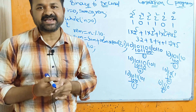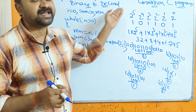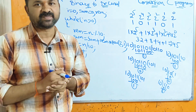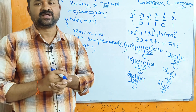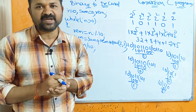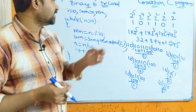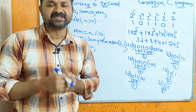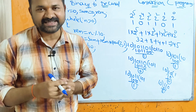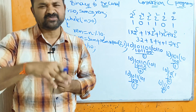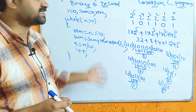Let's see a C program to convert a binary number to a decimal number. The input is a binary number which is a combination of two bits: zeros and ones. The output is a decimal number, which is a combination of 10 digits from 0 to 9.